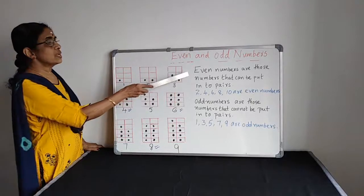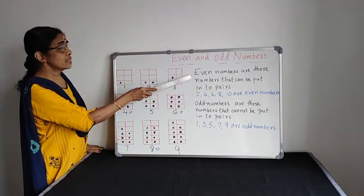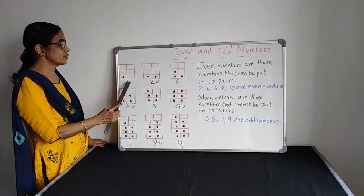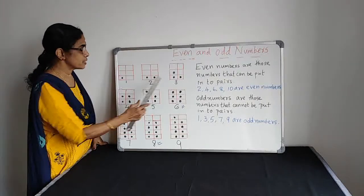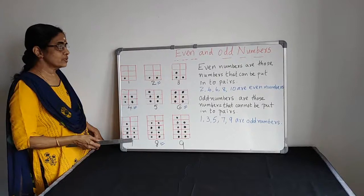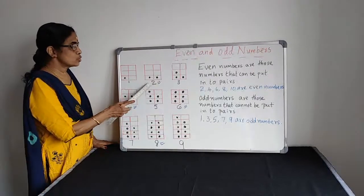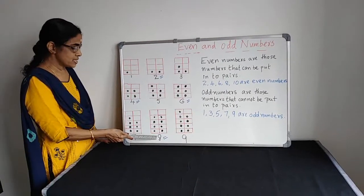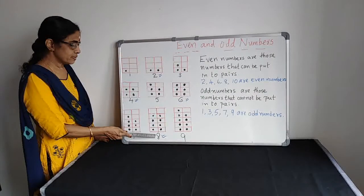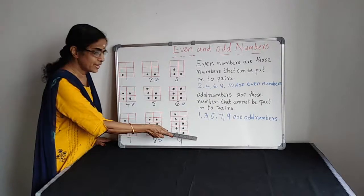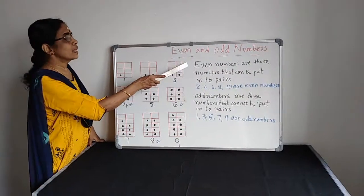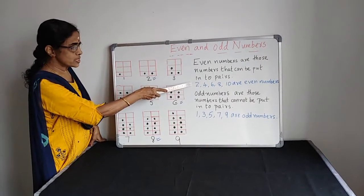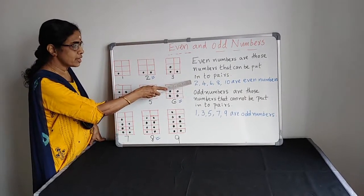Even numbers are those numbers that can be put into pairs. Closely observe — some are pairing, some are not pairing. The numbers that pair are: two, four, six, eight. The next pairing number is ten. So two, four, six, eight, ten are even numbers.